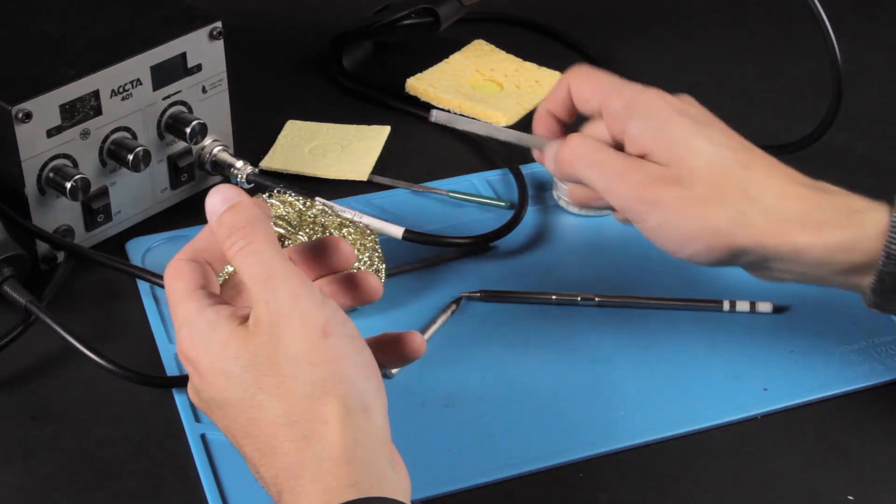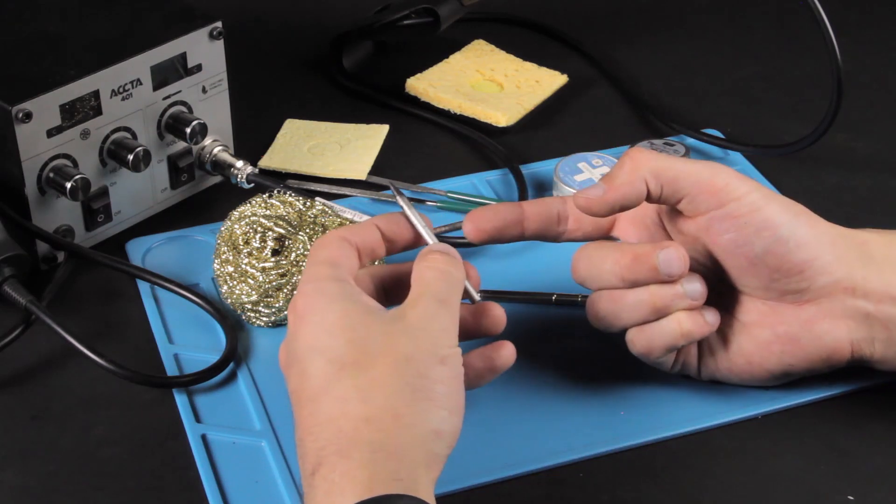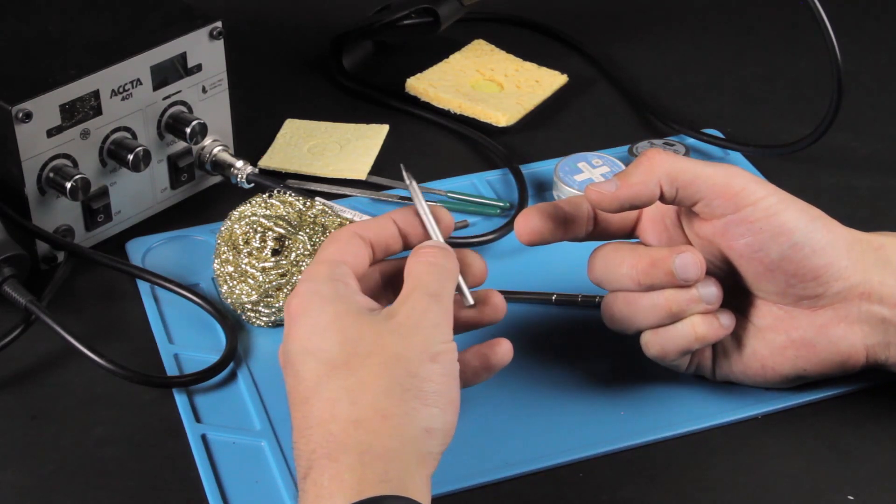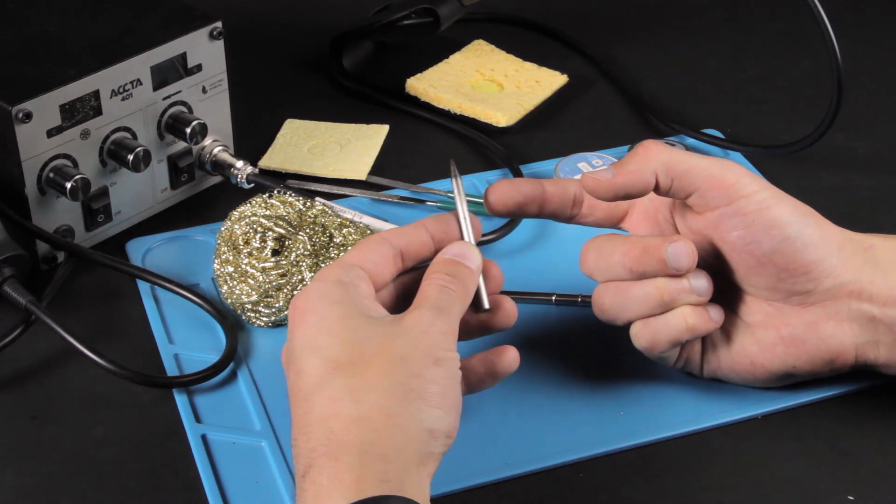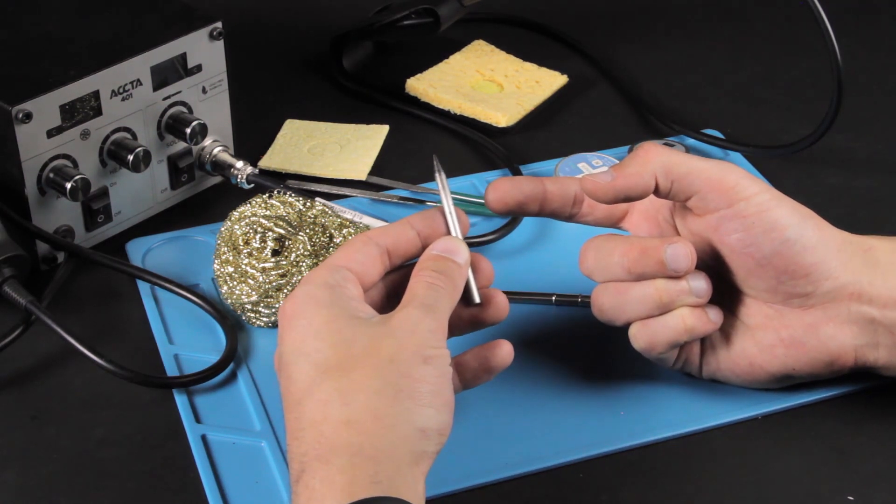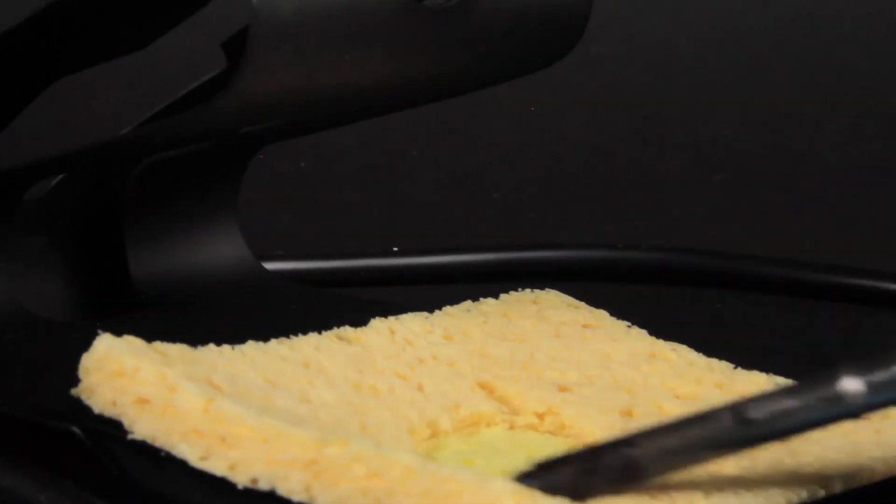But the non-stick tips are not to be rubbed with needle files or polishing paper because you damage the nickel plating and the solder will not stick to the tip anymore. To clean the non-stick tips, use sponges, brass wool, or refreshers.